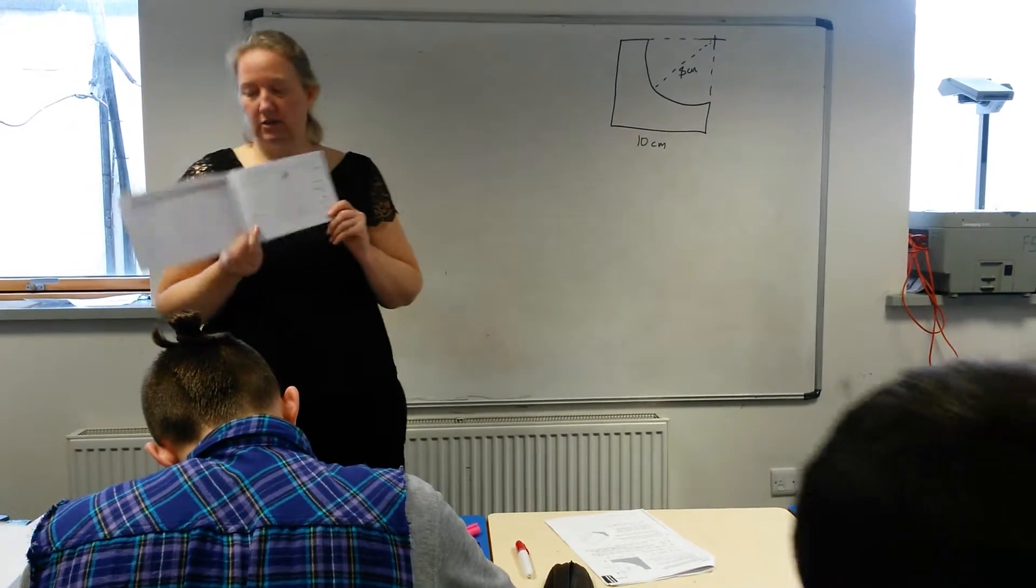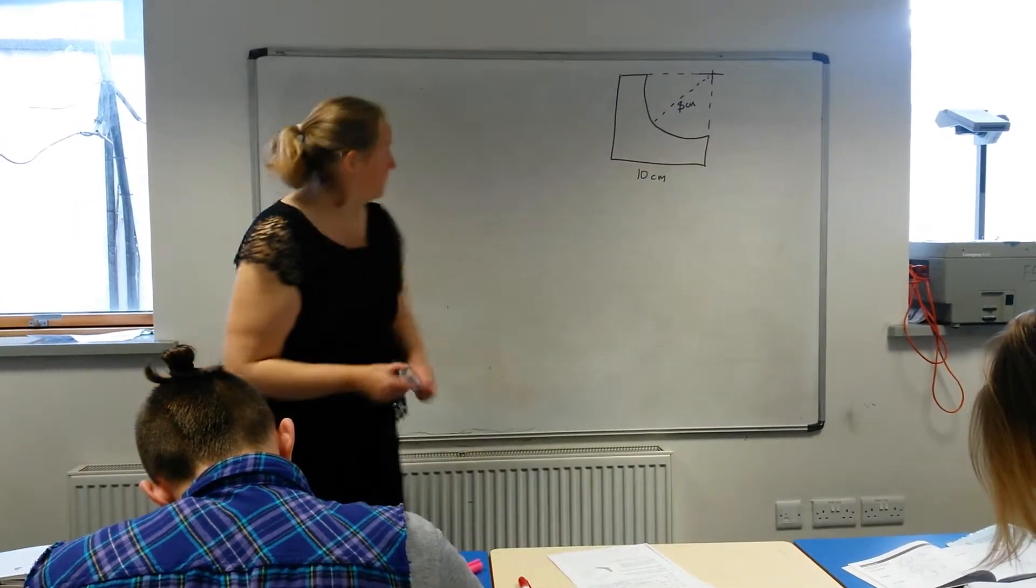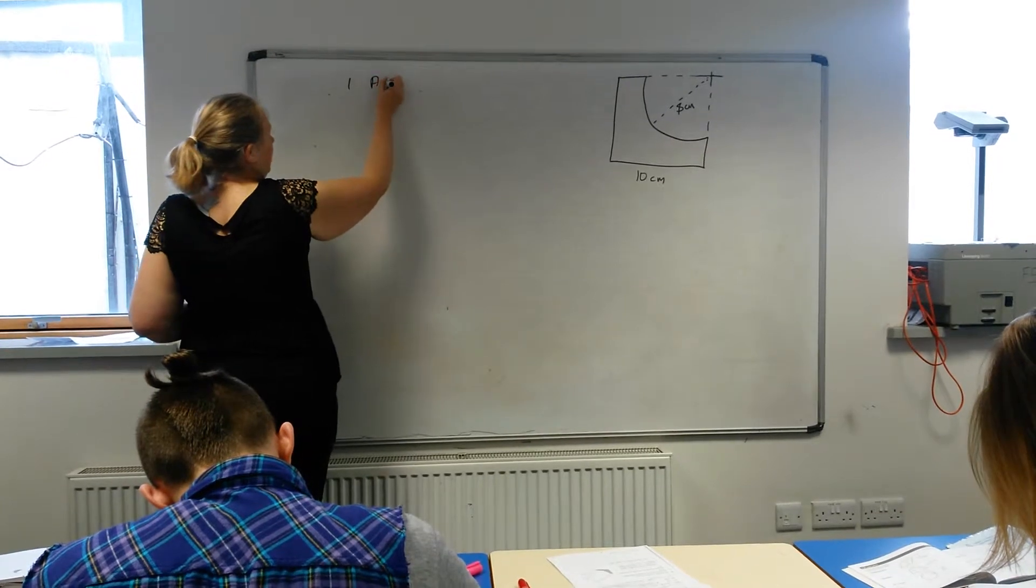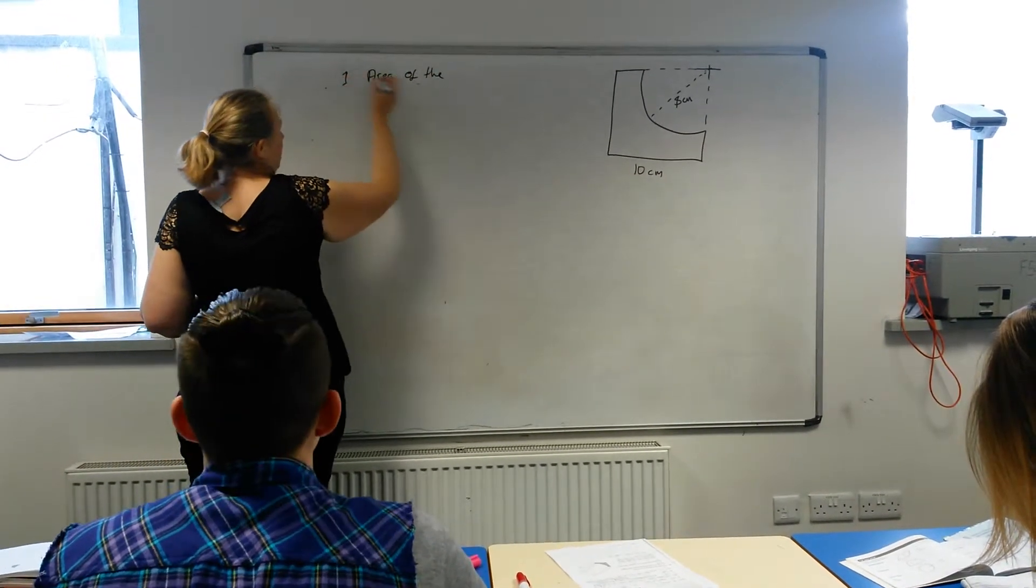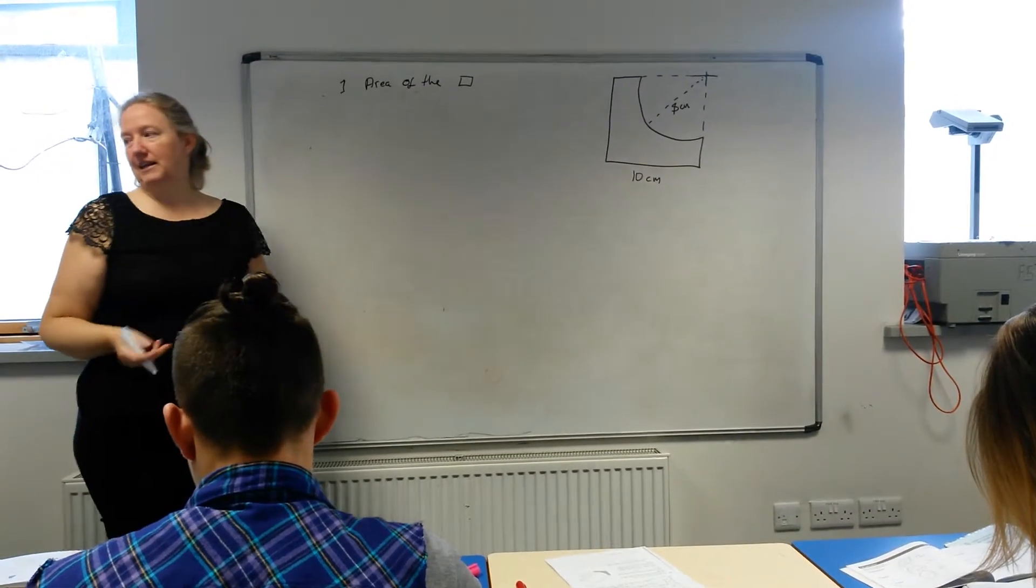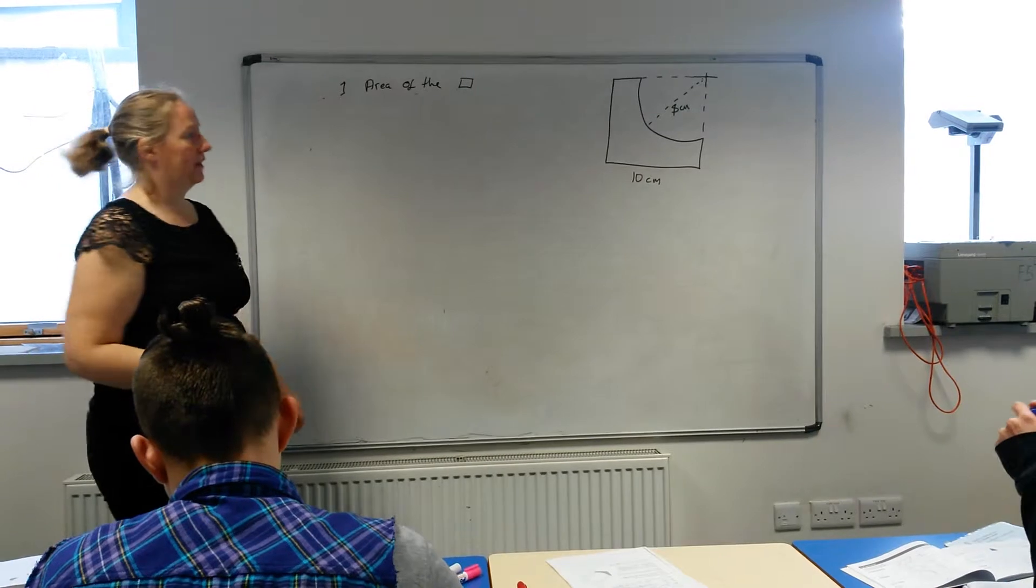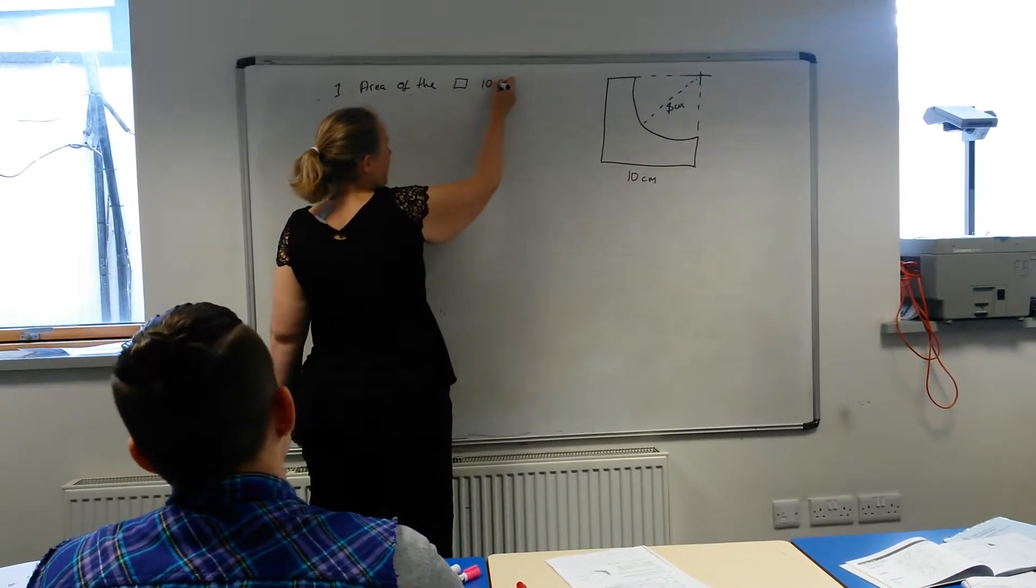And what you need to do for this question is you need to find, number one, the area of square. Now, it's not going to tell you how to get that. It expects you to know that the area of the square is that side by that side, which is ten by ten.